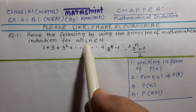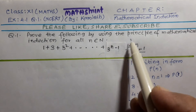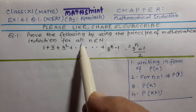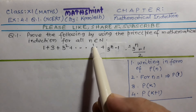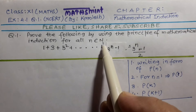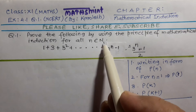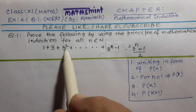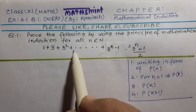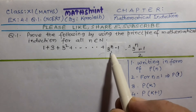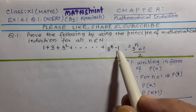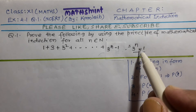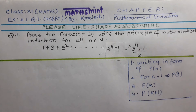Question 1: Prove the following by using the principle of mathematical induction for all n belonging to natural numbers. The statement is: 1 plus 3 plus 3 squared plus dot dot dot plus 3 to the power n minus 1, equals 3 to the power n minus 1, divided by 2.